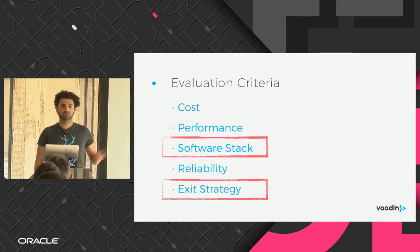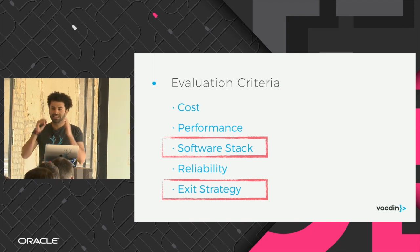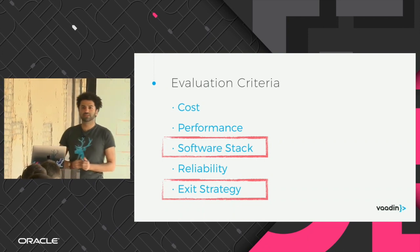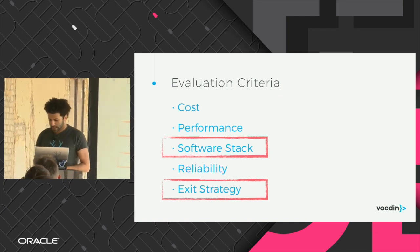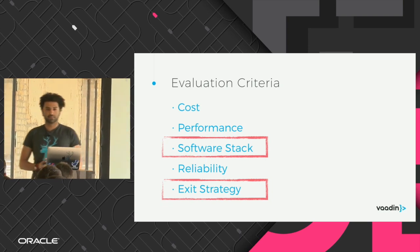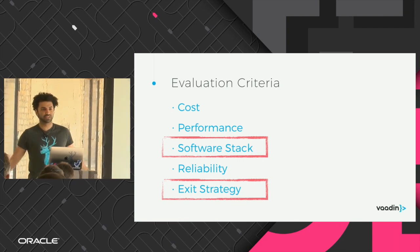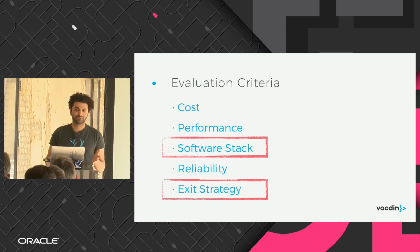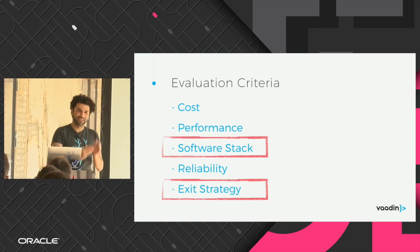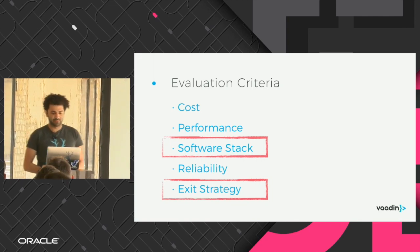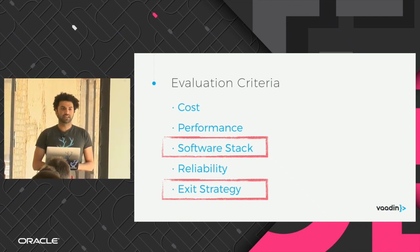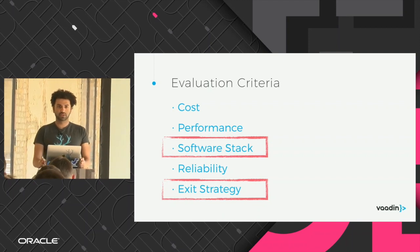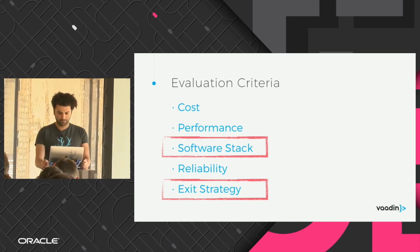For today I picked only two evaluation topics — cost and reliability are very dependent on your business application and stack, so it's really hard to give a concrete answer. Amazon is the biggest cloud host but it still goes down sometimes. These are metrics that are not easily measurable, so I'll leave that homework for you and focus only on software stack and the ability to exit the platform.